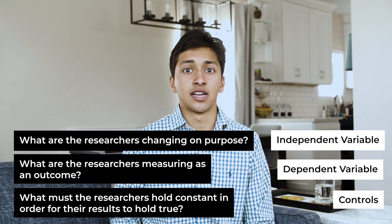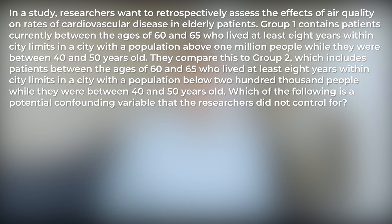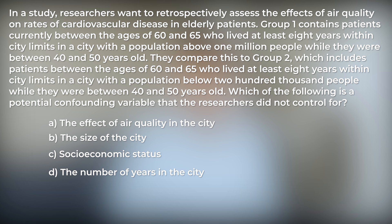Let's look at the following example. In a study, researchers want to retrospectively assess the effects of air quality on rates of cardiovascular disease in elderly patients. Group 1 contains patients currently between the ages of 60 and 65 who lived at least 8 years within city limits in a city with a population above 1 million people while they were between 40 and 50 years old. They compare this to group 2, which includes patients between 60 and 65 who lived at least 8 years in a city with a population below 200,000 people while they were between 40 and 50 years old. Which of the following is a potential confounding variable that the researchers did not control for? A, the effect of air quality; B, the size of the city; C, socioeconomic status; or D, the number of years lived in the city.